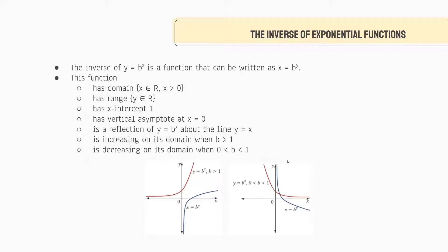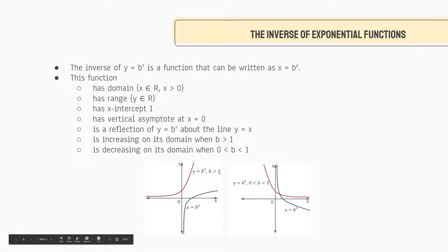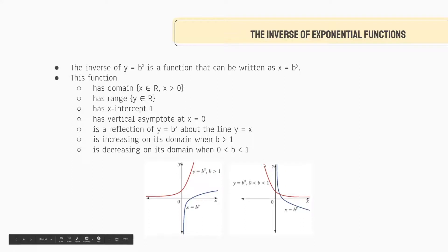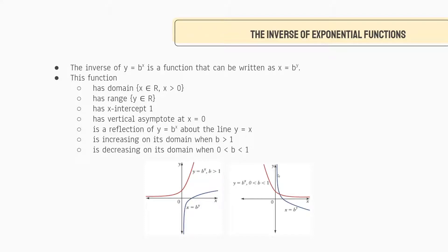Lastly, regarding whether the inverse is increasing or decreasing — that stayed the same. It is increasing on its domain when b is greater than 1, and decreasing when b is greater than 0 but less than 1. We can look at these two graphs: the original exponential function, then we draw the line y equals x, flip all our values, and now we have x equals b to the power of y as the inverse.